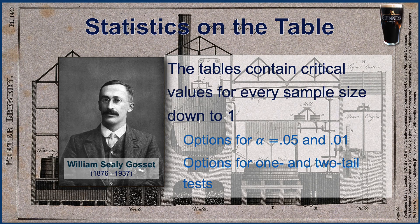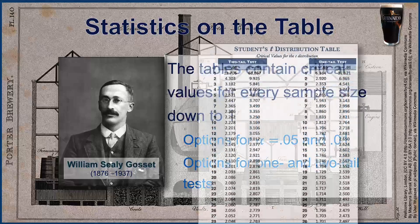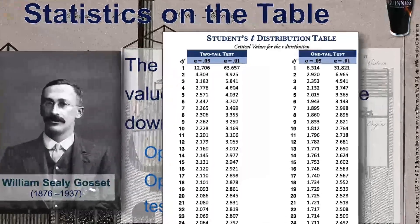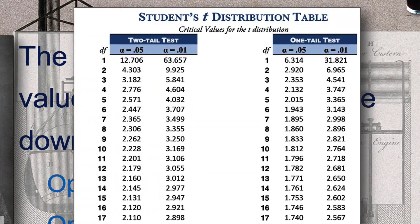Here is an example of the table that Gossett created. This same table is included at the last page of your course notes, and you can find similar tables on the internet. Notice how we have columns for both 1 and 2 tailed tests at both .05 and .01 alpha levels.